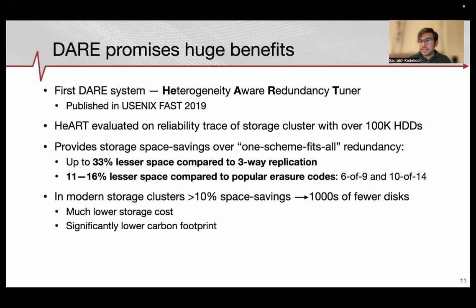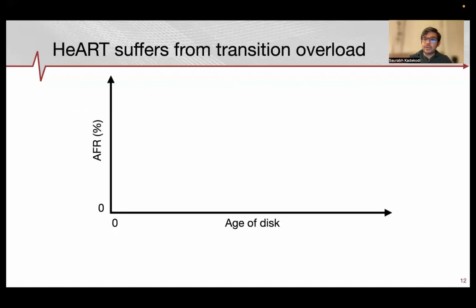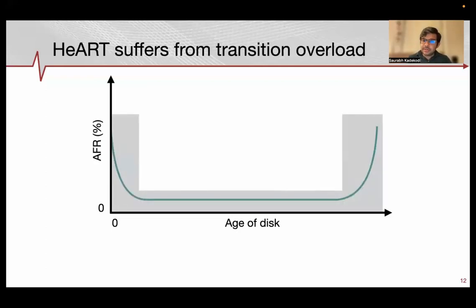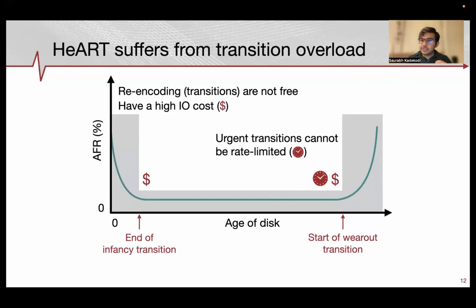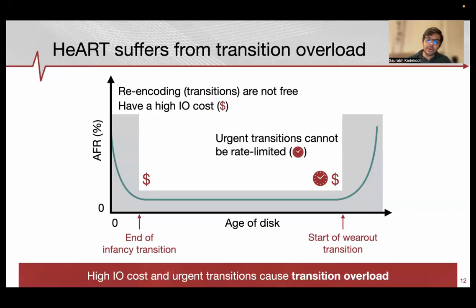HART suffered from what we call transition overload. HART did not account for the fact that changes in redundancy at the end of infancy and the start of wear-out are not free — they have a high IO cost. Moreover, when the redundancy must be changed at the start of wear-out, the AFR curve is rising, and if not acted upon promptly, the AFR might cross the tolerated region, rendering data underprotected. This high IO cost combined with urgent transitions is what we call transition overload. To solve that, we have Pacemaker.